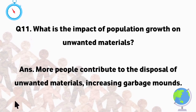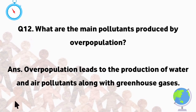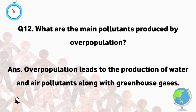What are the main pollutants produced by overpopulation? Overpopulation leads to the production of water and air pollutants along with greenhouse gases.